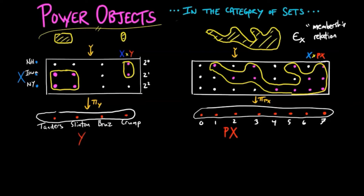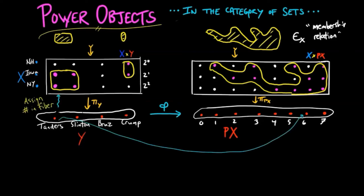The structure on the left determines a unique map phi from Y to the power set of X, which assigns an element in Y to the corresponding binary number described by the fiber. So for example, phi maps Tanders to 6, since Tanders spent more than $1,000,000 in Iowa and New York, but not in New Hampshire.